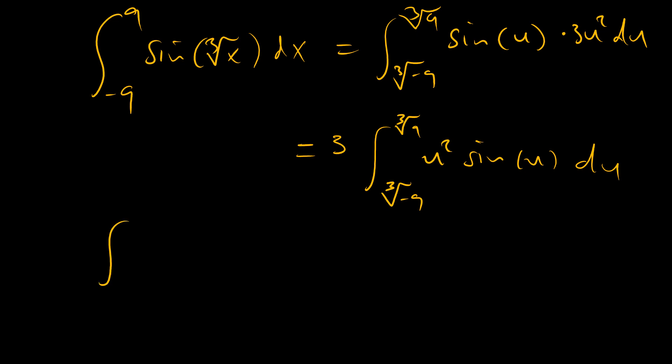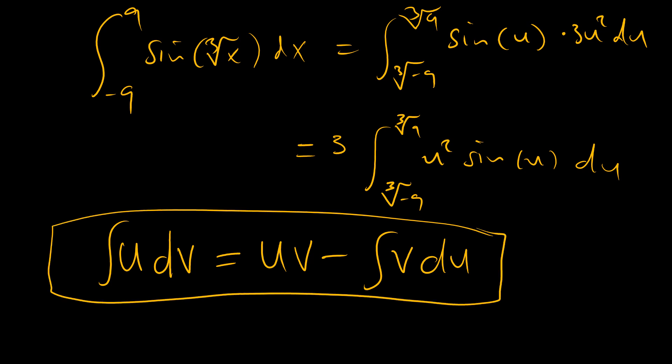The next thing we want to do is integrate by parts. If you have the product of a function u and the derivative of function v, when you integrate that, that's the same as uv minus the integral of v times the derivative of u. This is our driving formula, and knowing that we can express sine u as the derivative of negative cosine u.